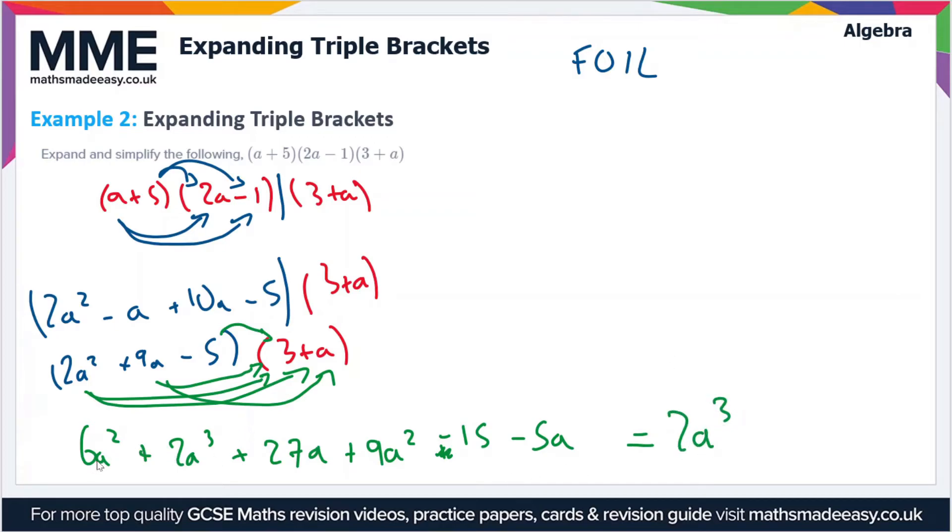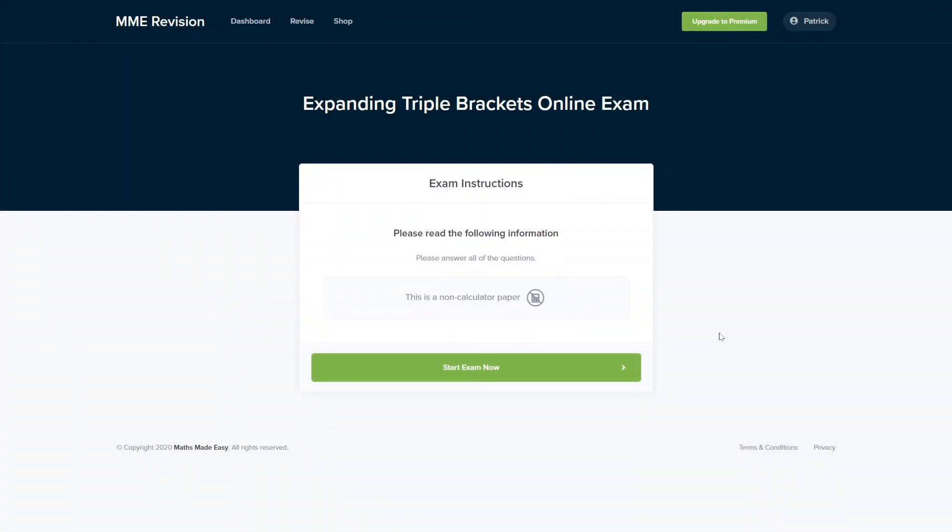If we collect like terms here, we have one term in a³, that's 2a³. The terms in a²: 6a² + 9a² = 15a². Terms in a: 27a - 5a = 22a. Finally, the constant term is -15. So the simplified expanded triple bracket is 2a³ + 15a² + 22a - 15.